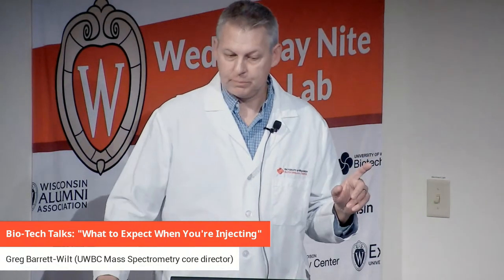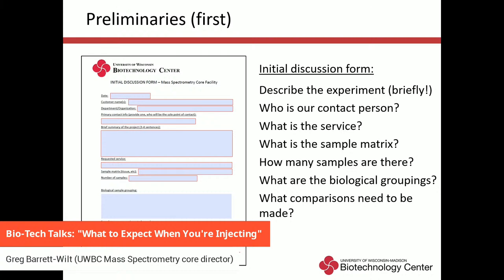Step two is the actual sample submission form, for when you're bringing samples to us. It includes date, your name, email, and phone number so we can contact you; who you work for; your company if applicable; and the UW funding string. For external sources that's often a direct invoice or PO; for internal clients we need that UW funding string to bill the work. This is a generic form we use for all mass spec submissions — check the lipidomics service box. Sample IDs and biological groupings can be filled in here, or we can send an Excel template.